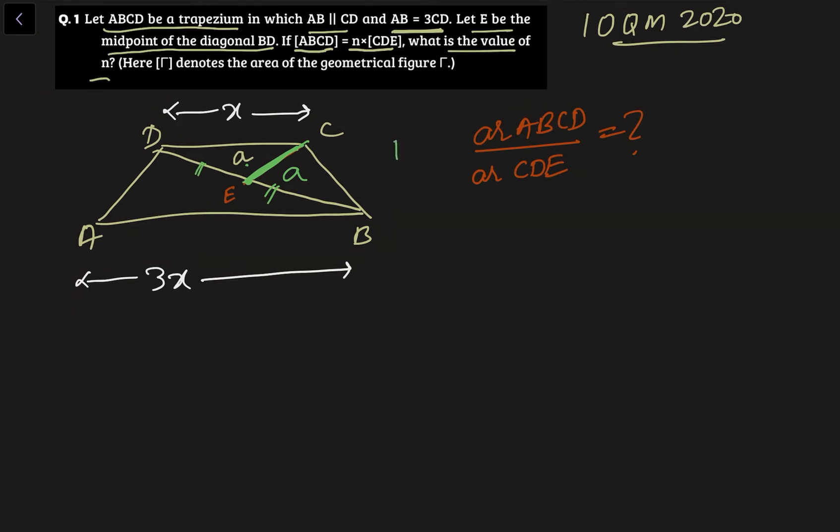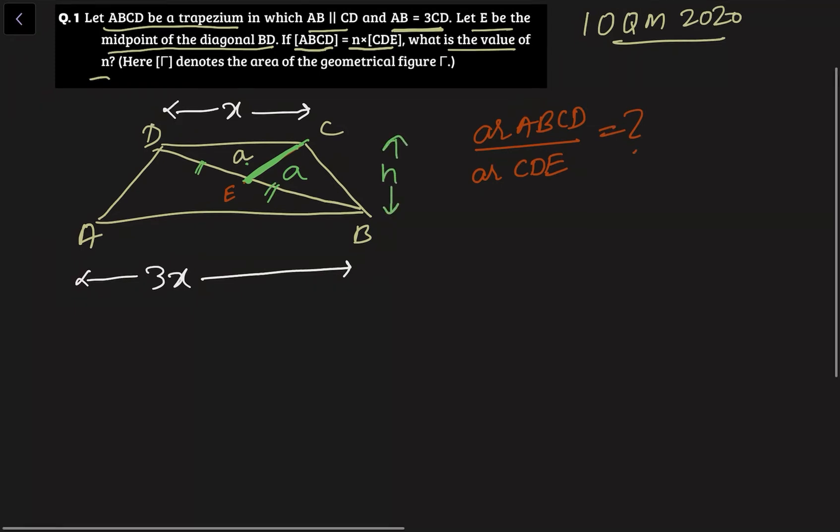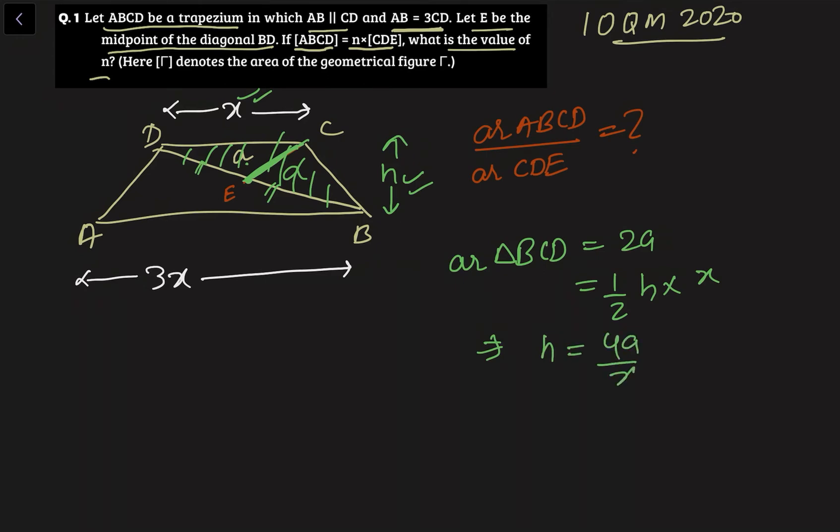Now from our side let's assume this height to be H. Now for this complete triangle, if I ask you what is the area of triangle BCD, that is 2A. And if we use the formula it will be half into this height H into this base X. So from here I am getting H is equal to 4A by X.